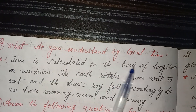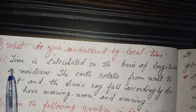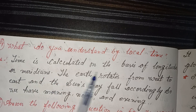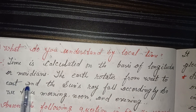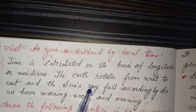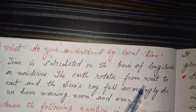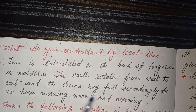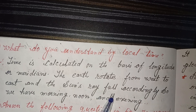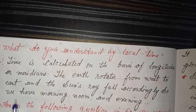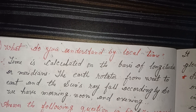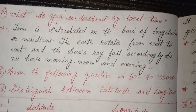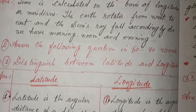Fourth: what do you understand by local time? Answer: time is calculated on the basis of longitudes or meridians. The earth rotates from west to east and the sun's rays fall accordingly, so we have morning, noon, and evening.